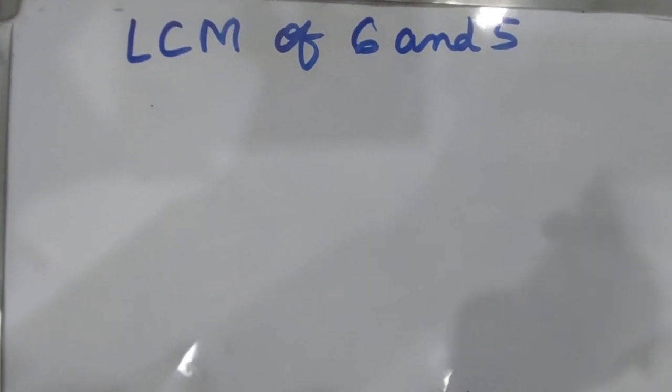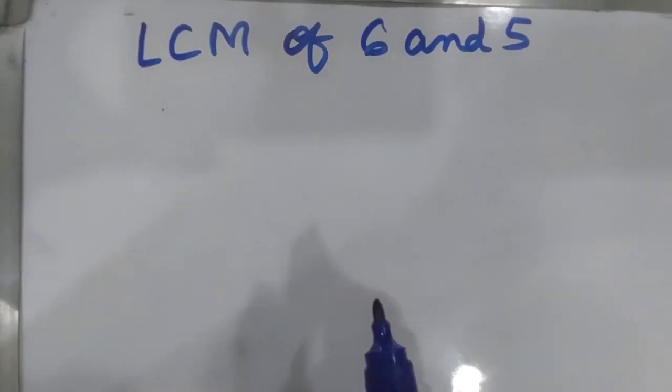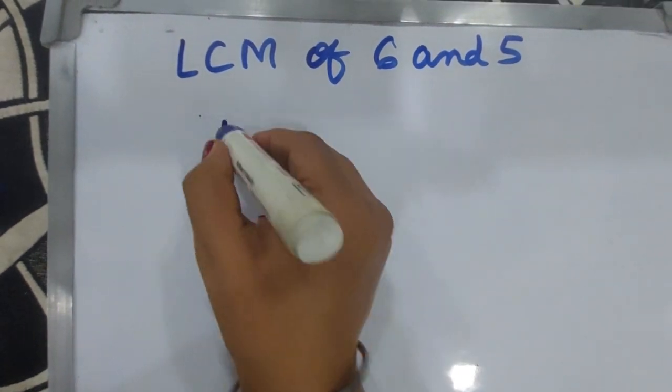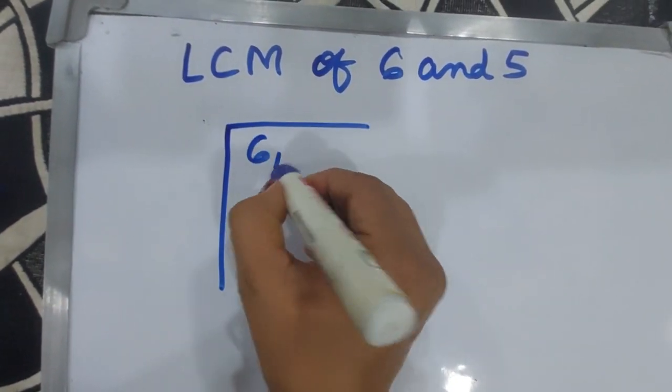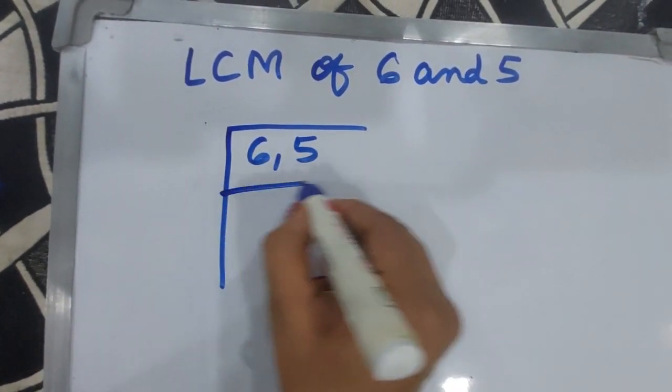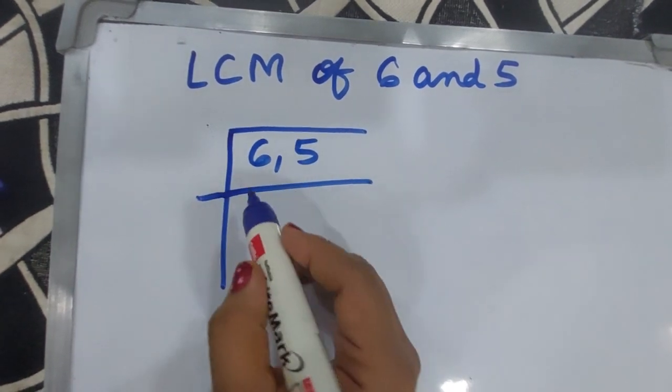Hello everyone, welcome to my YouTube channel. Today we'll find the LCM of 6 and 5. First, you write 6 and 5, then find the lowest prime number.